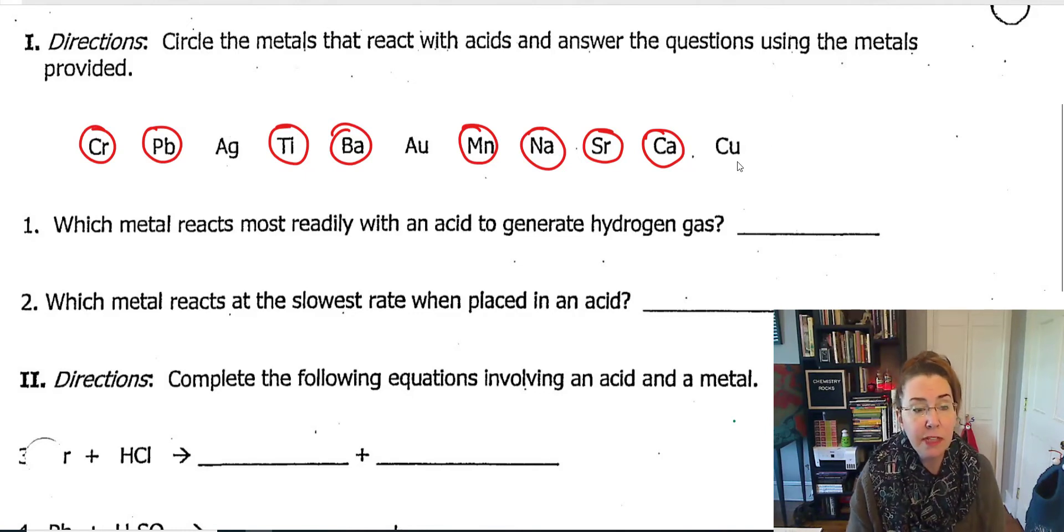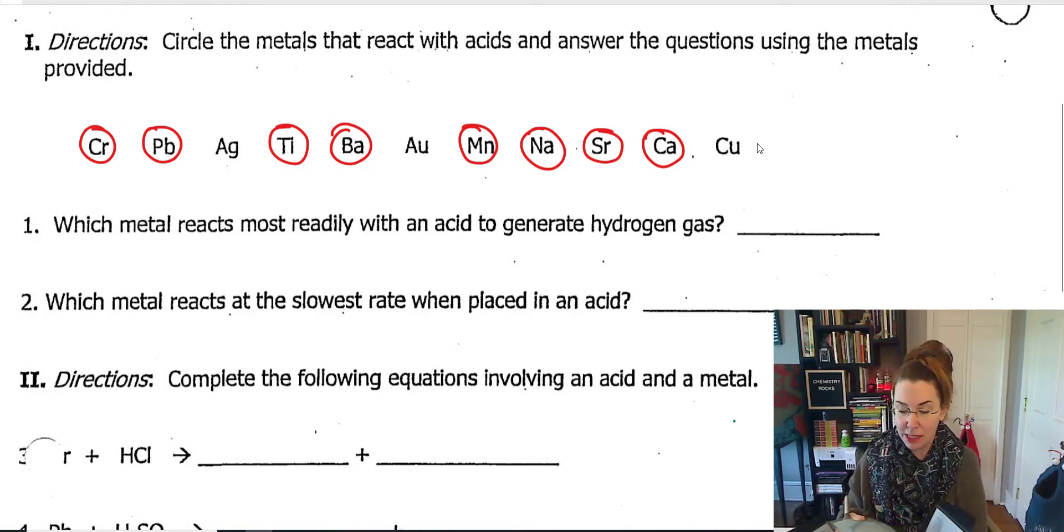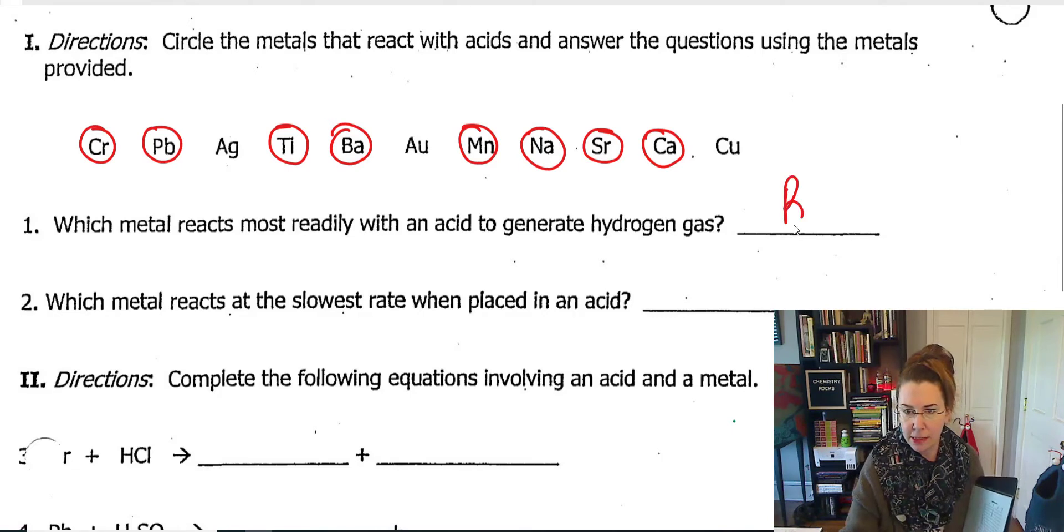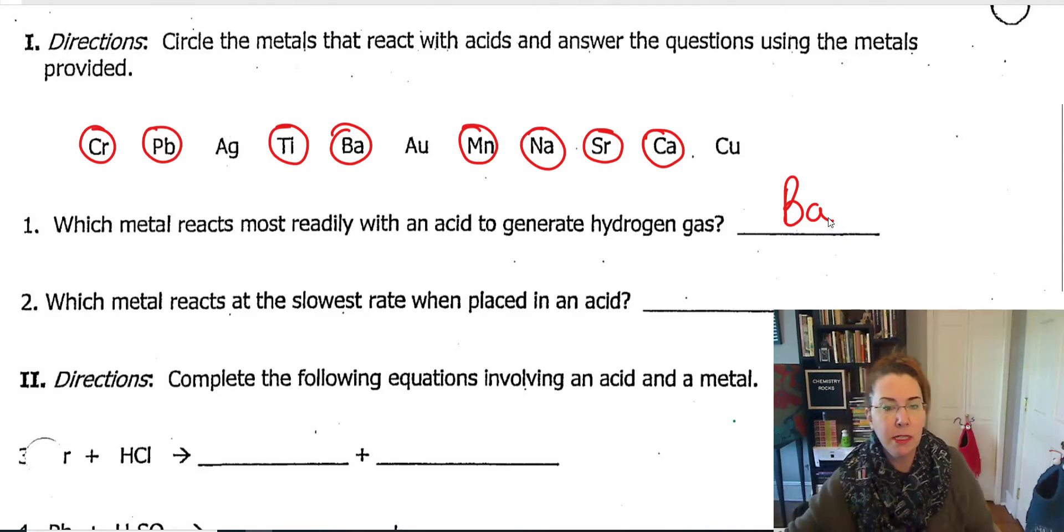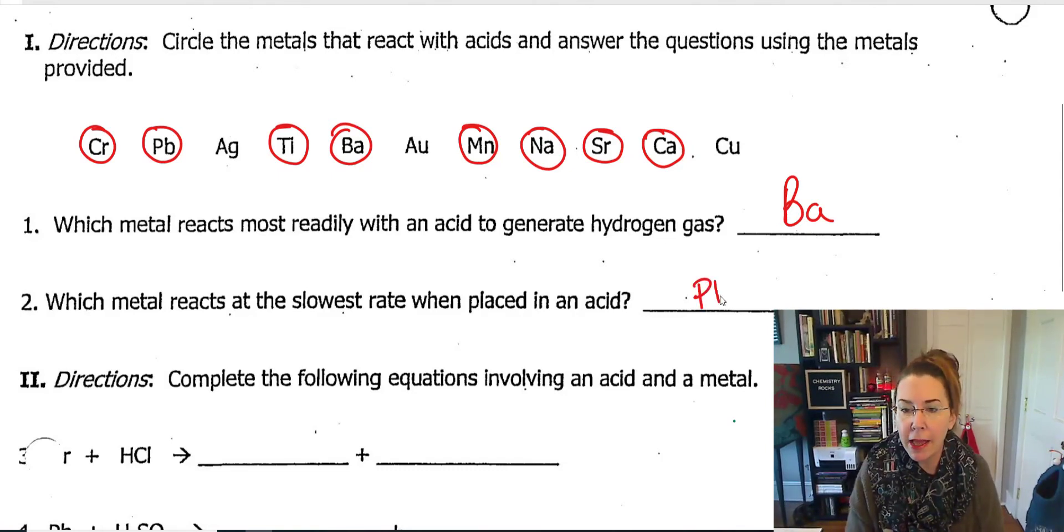It says circle the metals that react with acids and answer the questions using the metals provided. We would be circling everything except for silver, gold, and copper. Which metal reacts most readily with an acid to produce hydrogen gas? That would be the metal highest on table J, which is barium. Which one would react at the slowest rate when placed in an acid? I interpret this as which one would react slowest but still react, which means we need to be above hydrogen on table J, and that would give us lead.